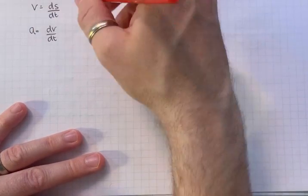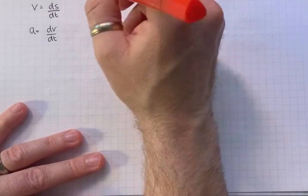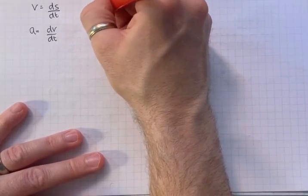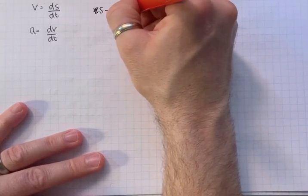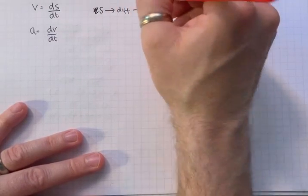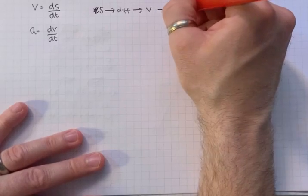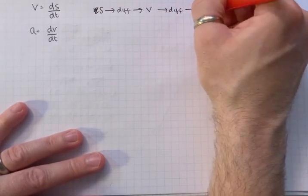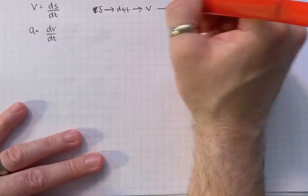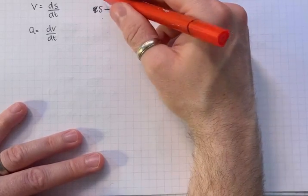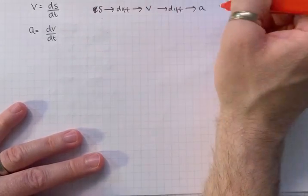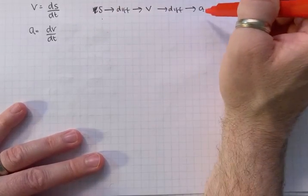So if you start off with displacement and you differentiate it, you get velocity. If you differentiate it again, you get acceleration. S-V-A. Remember it as D-V-A-D for distance. Displacement, D-V-A, S-V-A. You need to remember that order.